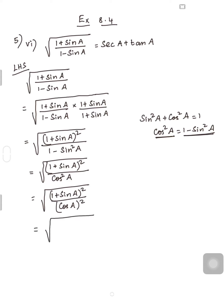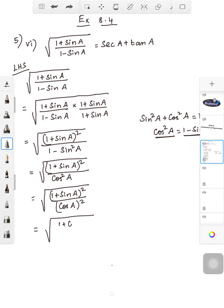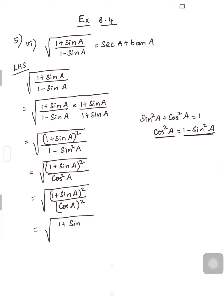Since both the numerator and denominator are perfect squares within the square root, both can be written with the whole square. That is, (1 + sinA) / cosA, the whole squared. Since A² / B² can be written as (A/B) whole squared, taking the square root of a squared number, the square gets cancelled. So you get (1 + sinA) / cosA.